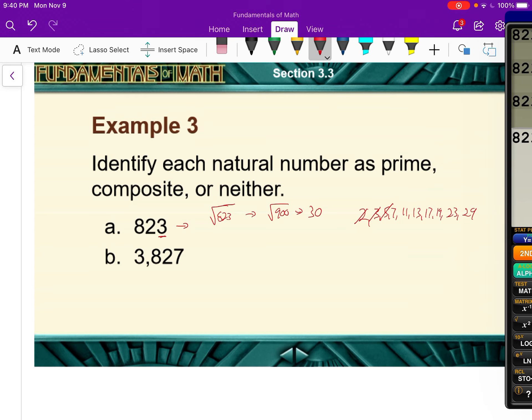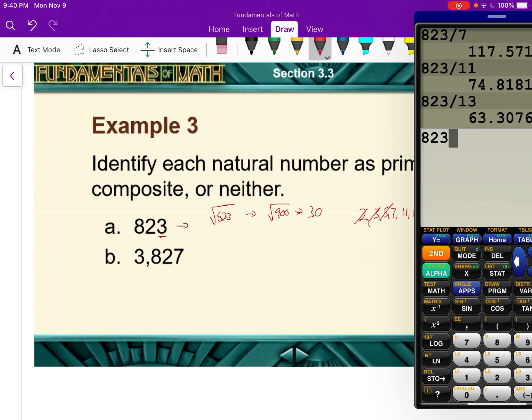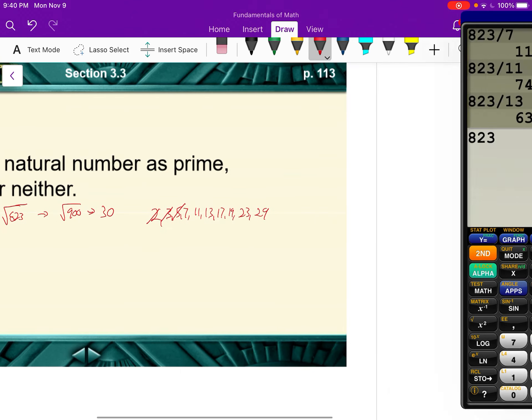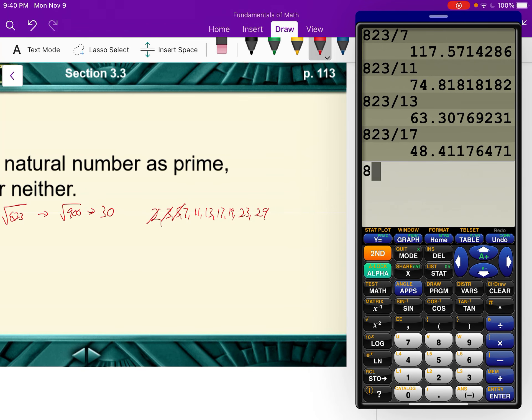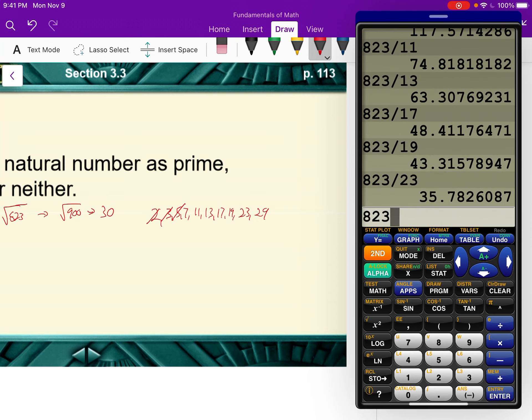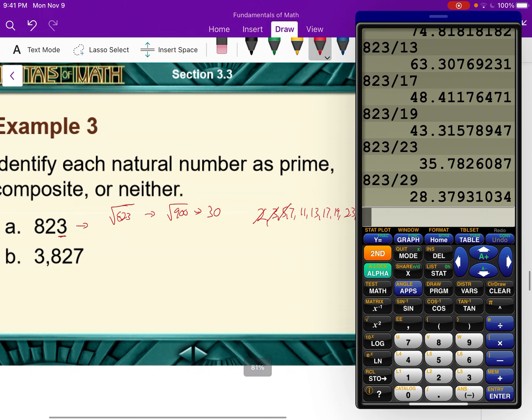823 divided by 17. It's not looking very hopeful here. 823 divided by 19. 823 divided by 23. And 823 divided by 29. None of those numbers went into it evenly. So this is a prime number.